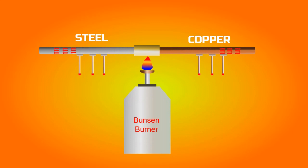Now if we apply heat at the joint, which matchstick will fall first? Thermal conductivity can tell us which material will conduct heat faster and melt the wax.